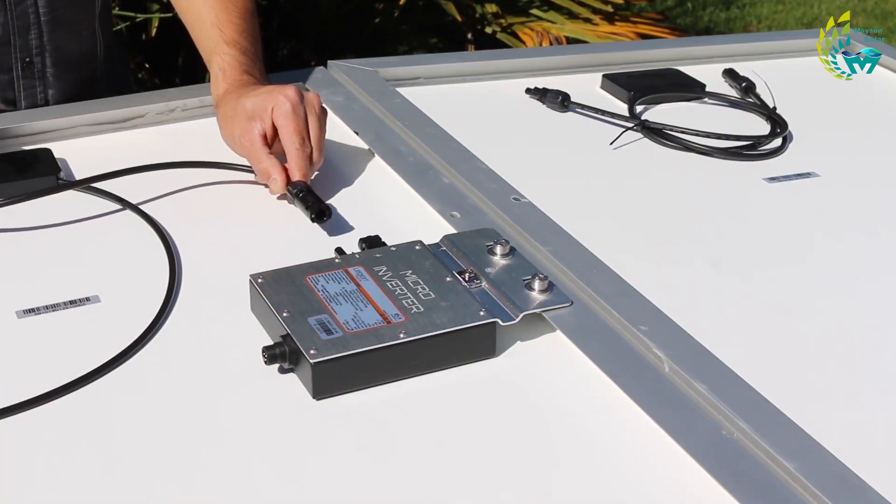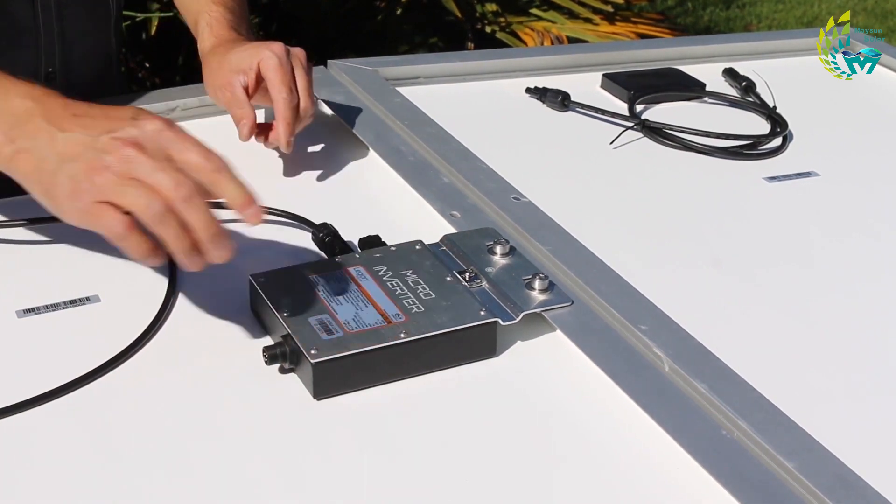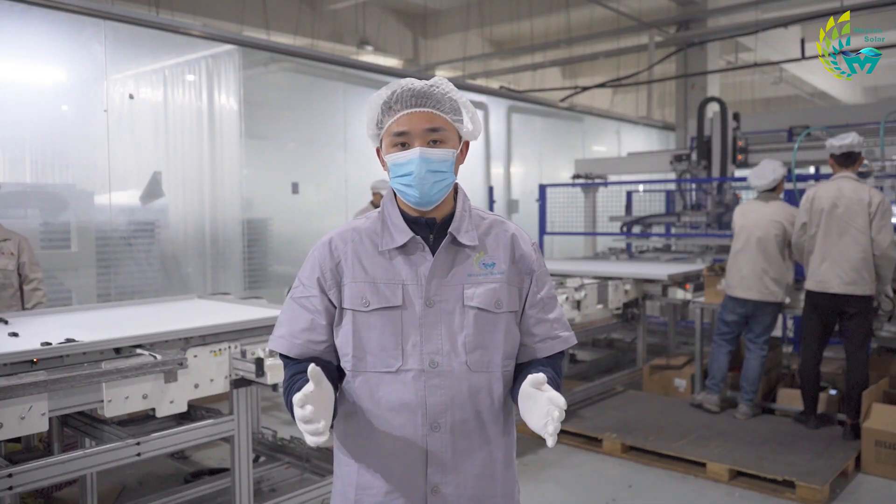The role of the external connector is to channel the current generated by the component to the inverter and controller through the connector. PV junction box has two main functions.